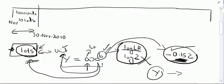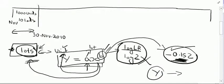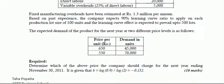The question further states that the learning curve effect is expected to prevail up to 500 lots — learning stops at 500 lots and after that there will be no learning. The expected demand for the next year at two different price levels is: at a selling price of Rs. 650, the company will sell 45,000 units; whereas at a lower price of Rs. 550, following basic economics, it will sell a higher quantity of 70,000 units.